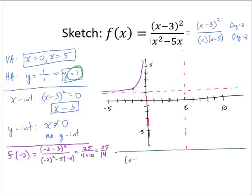If I set x minus 3 squared over x squared minus 5x equal to 1, that'll tell me if the curve ever crosses the horizontal asymptote. So let me multiply through by the x squared minus 5x. And that implies that x minus 3 squared is equal to x squared minus 5x. x minus 3 squared is x squared minus 6x plus 9, and that equals x squared minus 5x.